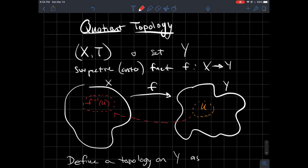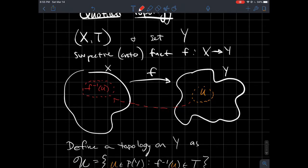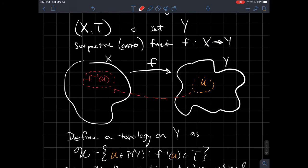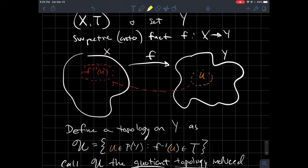We're going to define our topology this way. The topology on Y that we're after is the following set, fancy U. What is fancy U? It's all possible subsets of Y such that the preimage of that subset is open back here in X in the topology that we know about. So it turns out that this collection of subsets of Y forms a topology on this space Y.